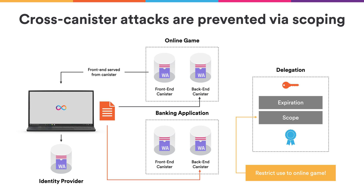If you followed closely, you may have seen a possible security issue with the delegation mechanism we introduced. Suppose a user is using their identity to access two different applications — one secure application such as online banking, and one potentially less secure application such as an online game the user is playing casually. If the delegation issued to that canister front-end is valid for all back-end canisters, then the front-end canister of that less secure application would also be valid for accessing all canisters of the secure application in the user's name. The solution for this is scoping delegations — we scope each delegation to contain exactly those canisters necessary to run the given front-end application.